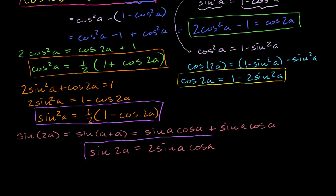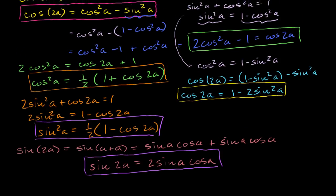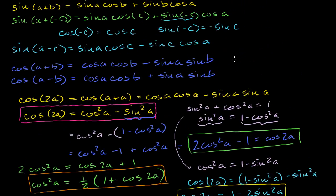I was able to get all the results I needed for my calculus problem, and hopefully this was a good review for you, because it was a good review for me. You can write these things down or memorize them, but the really important takeaway is that you can derive all of these formulas from just a few initial formulas. And even those, I have proofs showing how to get them from the basic definitions of trig functions.